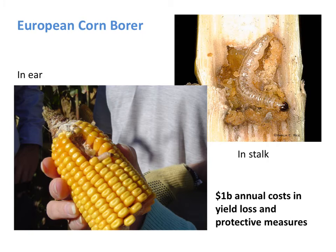From a more serious or economic standpoint, European corn borer is a very detrimental economic and agricultural problem. You can see the corn borer worm in the ear of a corn plant or in the stalk of a corn plant. The European corn borer causes over a billion dollars in annual costs due to chemical spraying and measures to reduce the corn borer, as well as economic costs incurred due to yield loss.